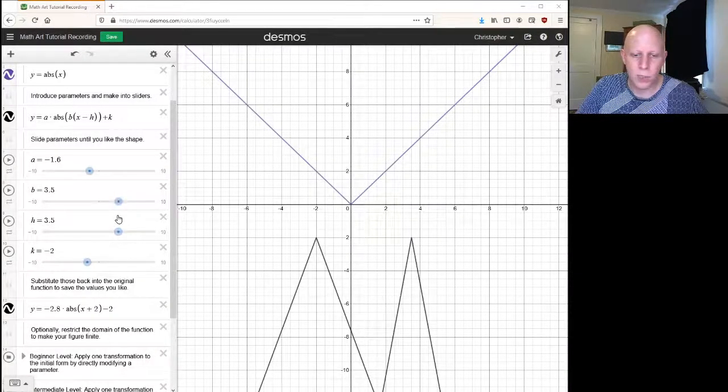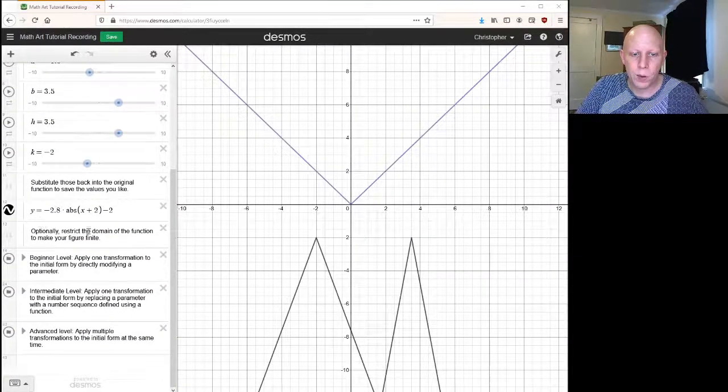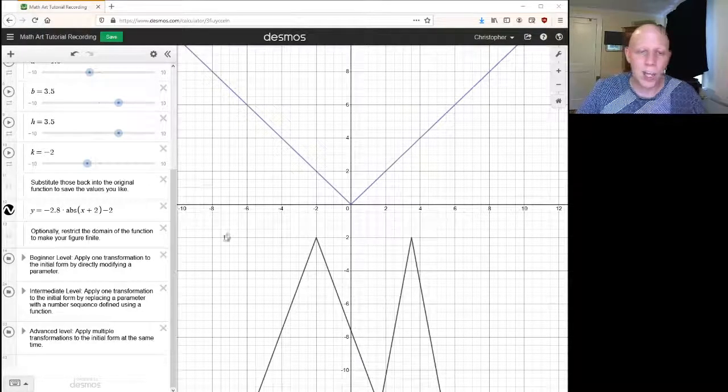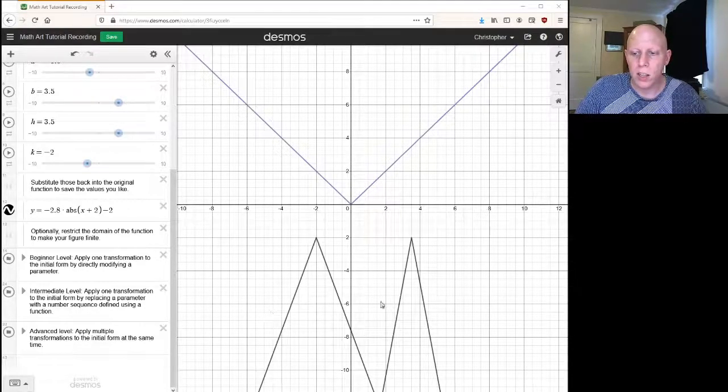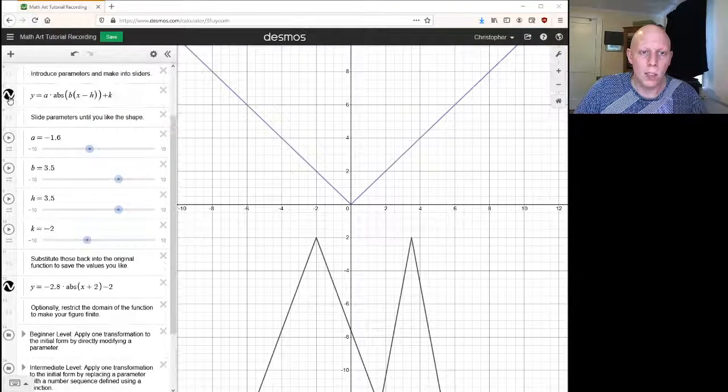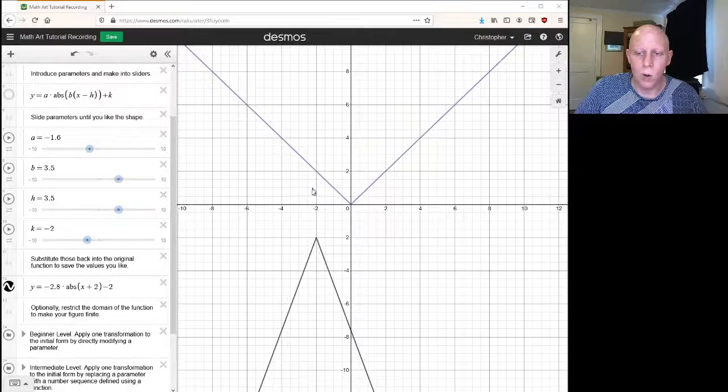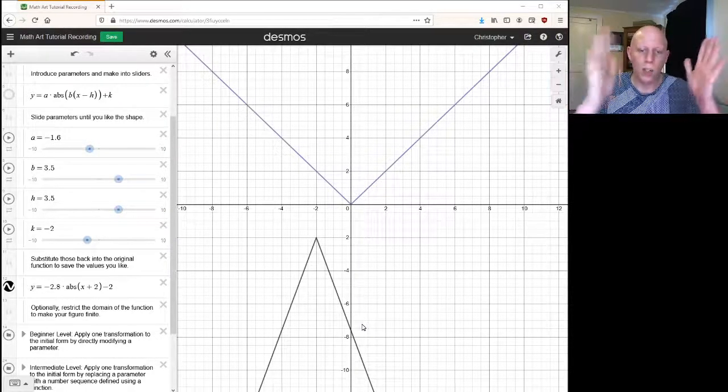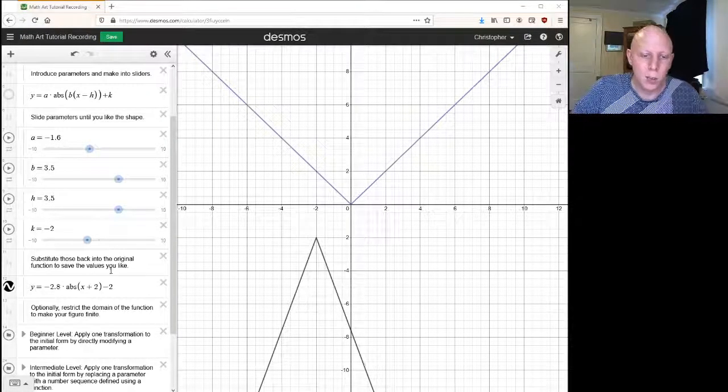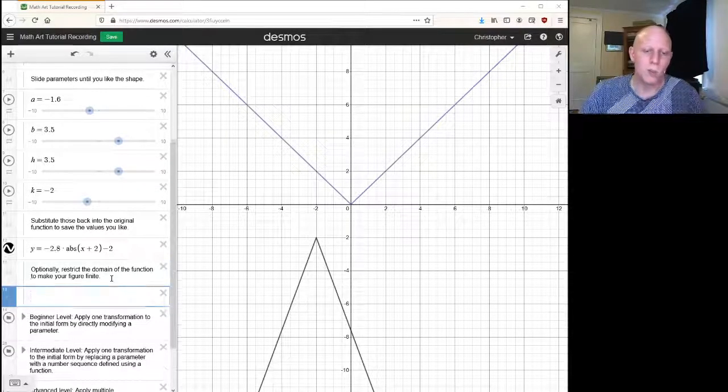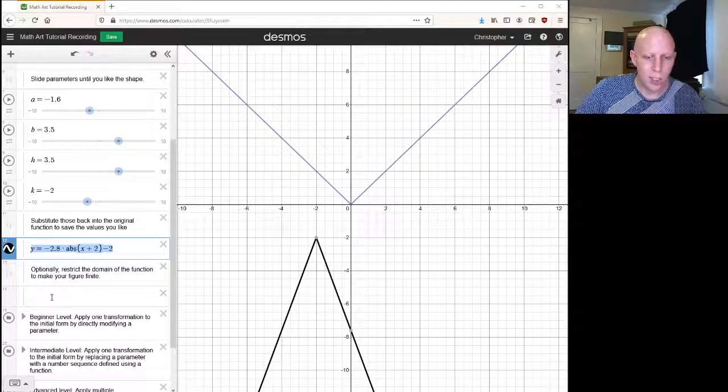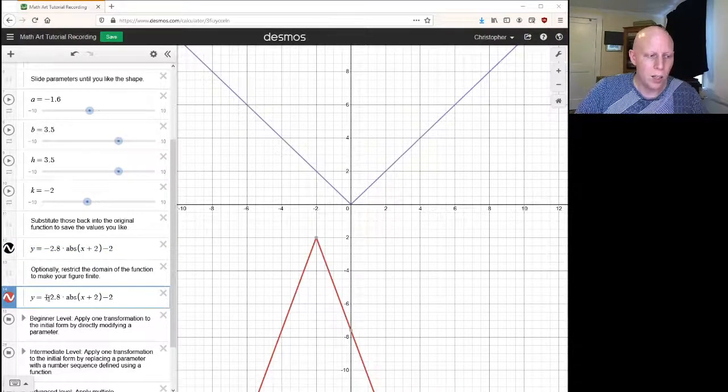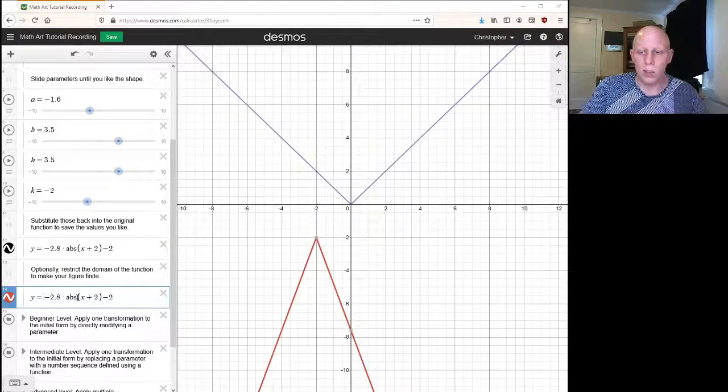One thing we talked about in class that might be useful for our function: maybe we don't want the whole absolute value function, maybe we only want a piece of it. If you remember, what we have to do is restrict the domain. So let's take this function and restrict its domain to something a little bit smaller.